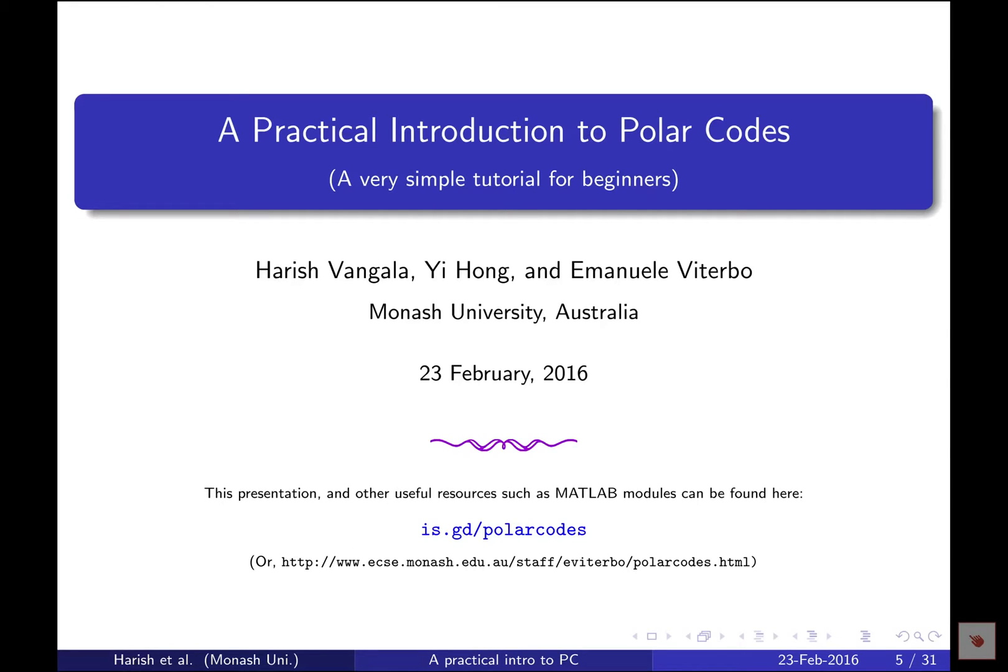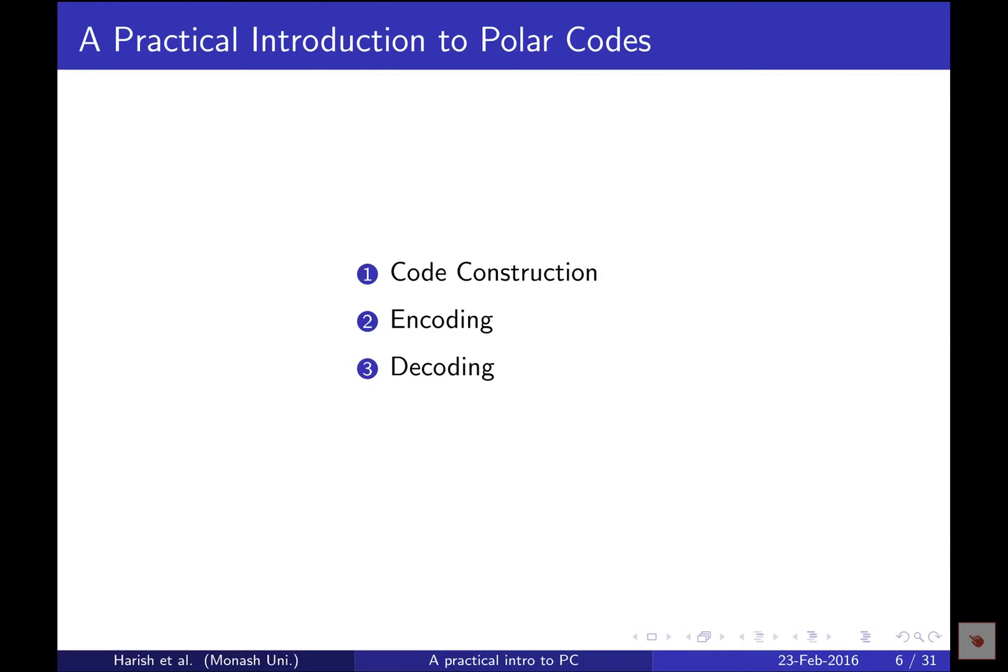In this part of the tutorial, we'll dig a bit deeper into the polar coding system. There are three essential blocks of polar codes: code construction, encoding, and decoding. In the first step, code construction, we decide parameters for encoding and decoding.